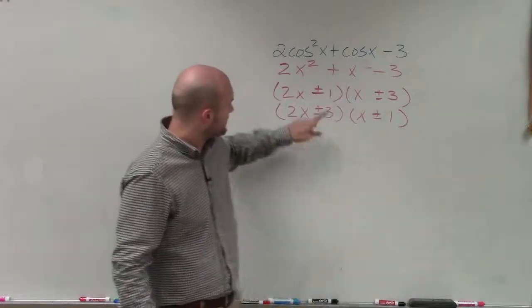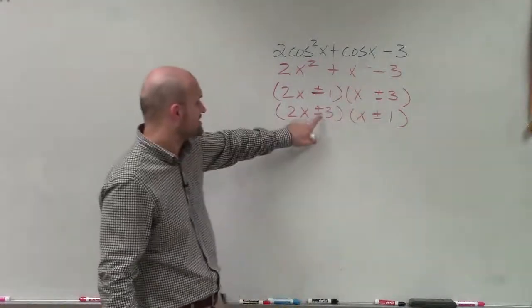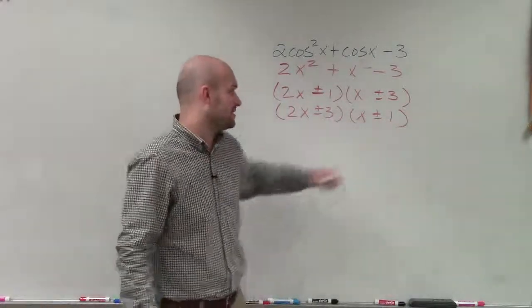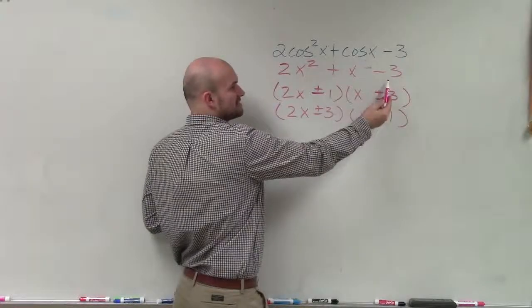Meaning, since we're multiplying to give us negative 3, if this is a positive 3 here, it has to be a negative 1 here. Same thing, if it's a negative 3 here, it has to be a positive 1 here, because one has to be positive and one has to be negative to give us a negative 3.